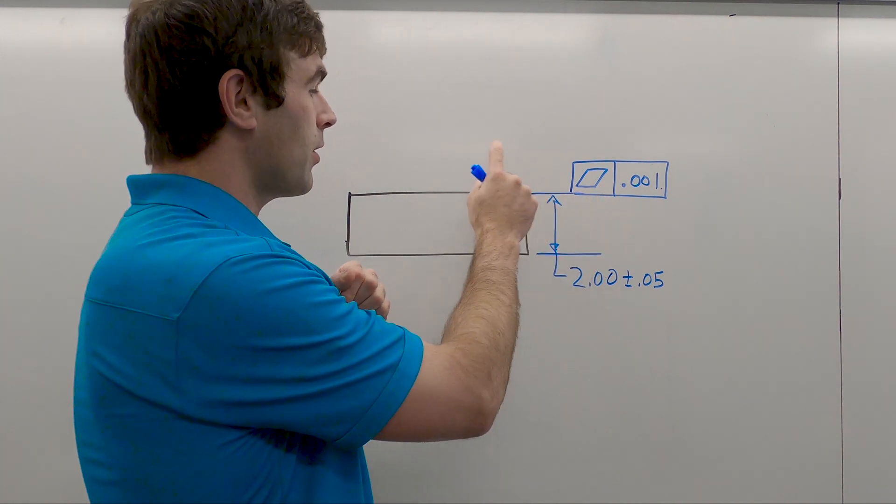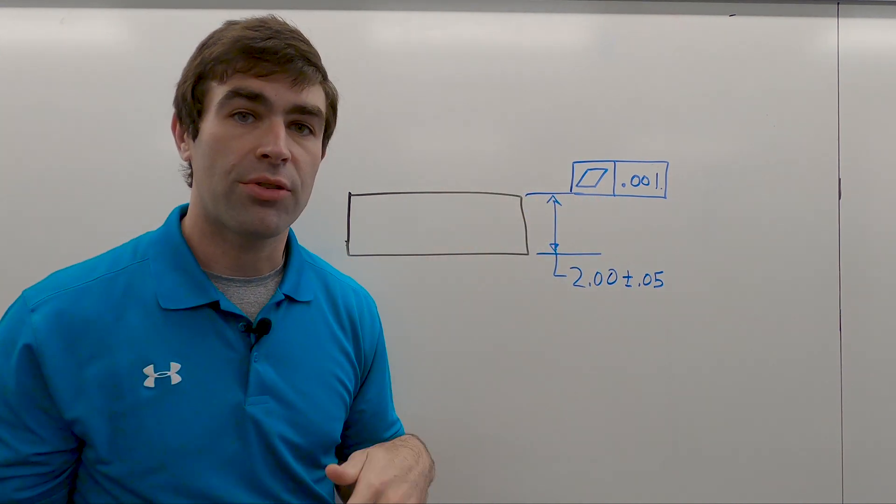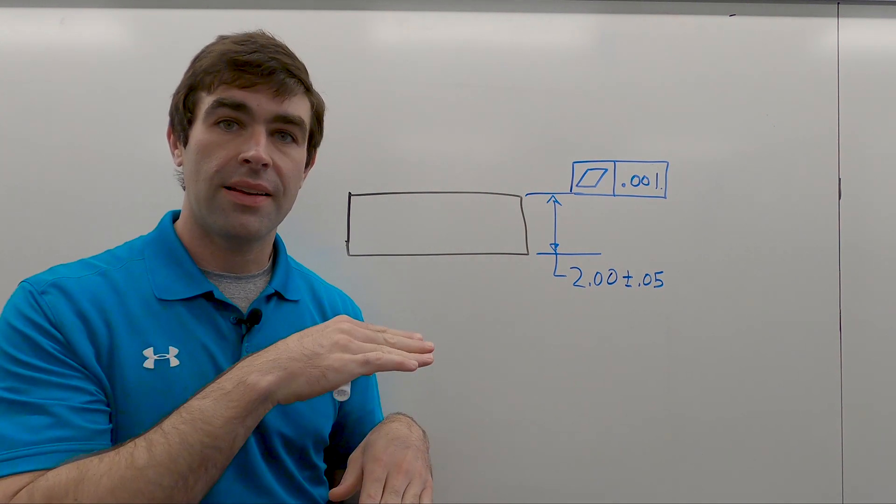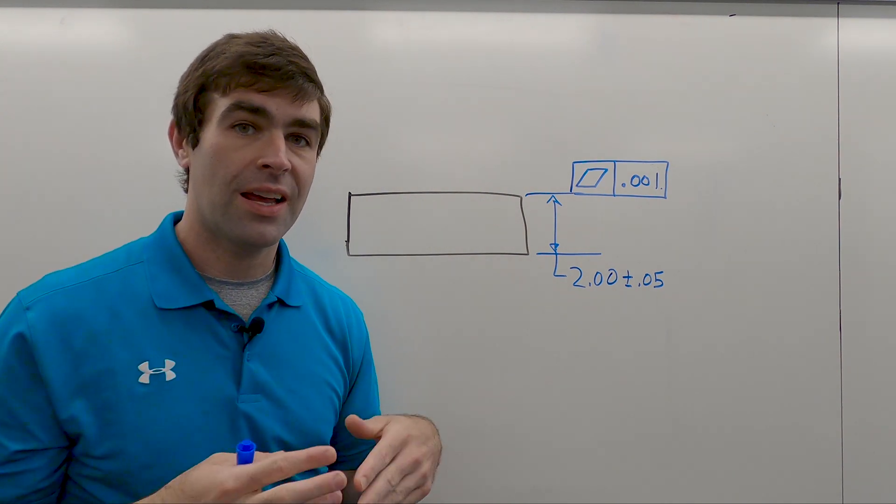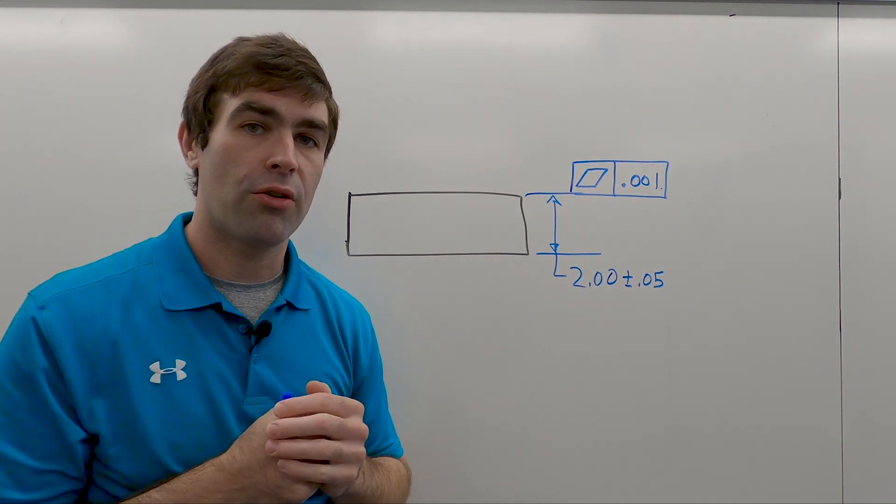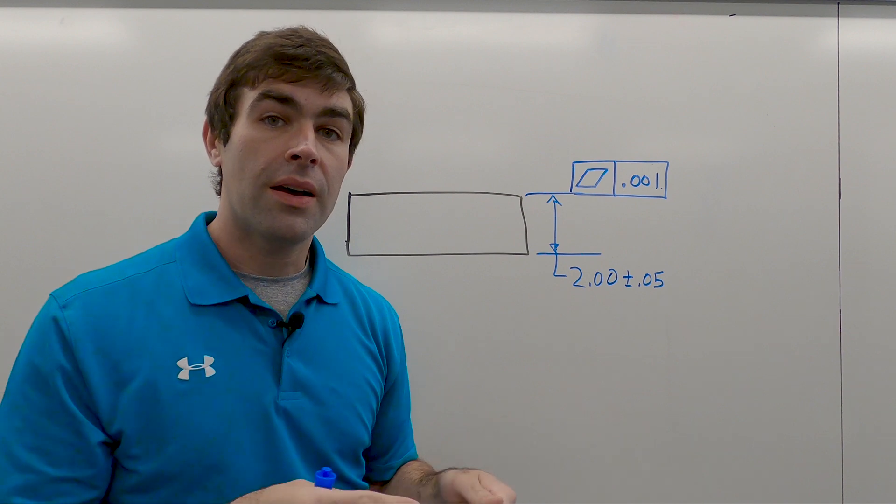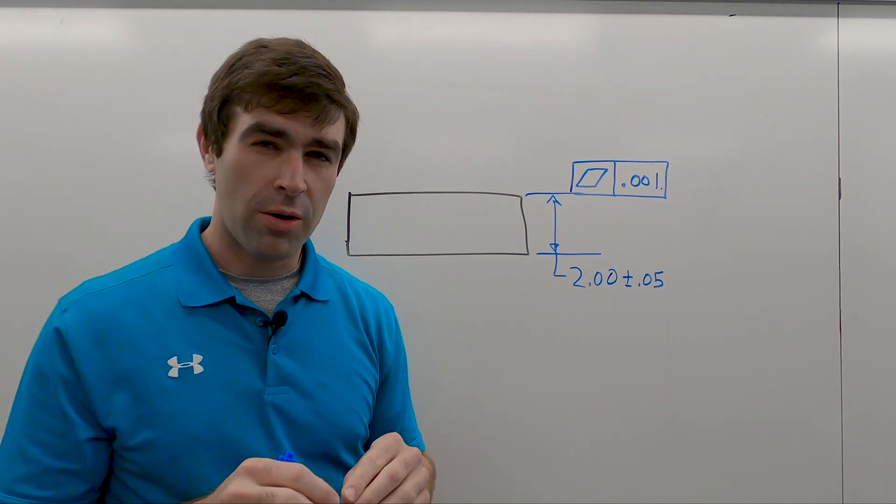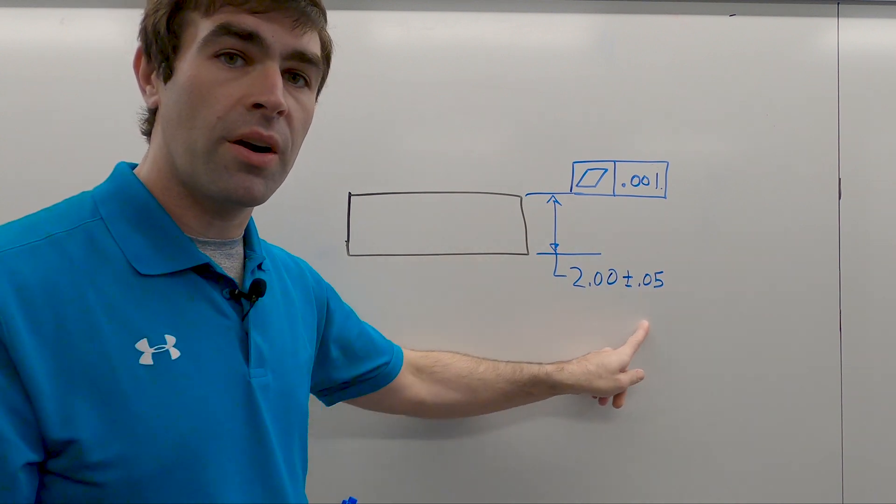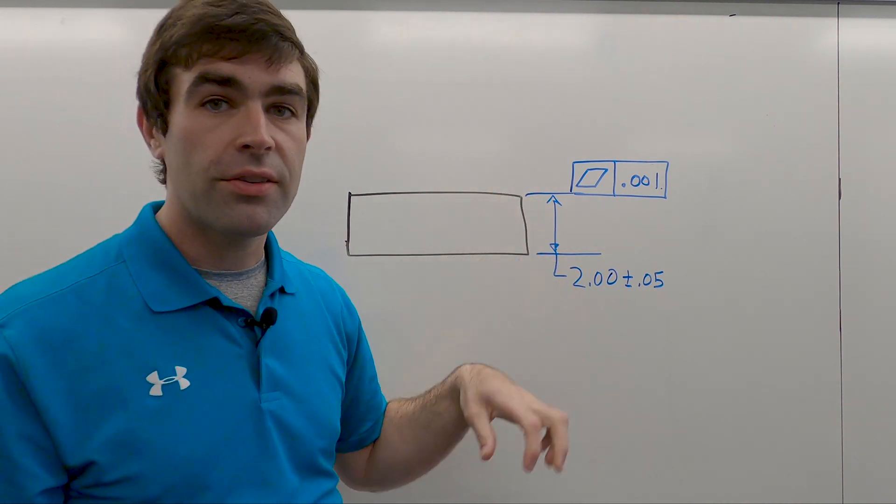You can prop this up or move it around any way you want because this bottom part has nothing to do with that top part. The flatness only applies to this top surface. So you position it however you need to, run an indicator over it. As long as the indicator drop isn't more than one thou, that surface would be good.